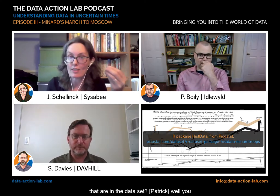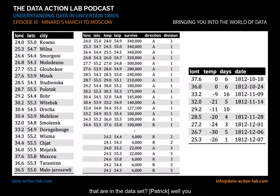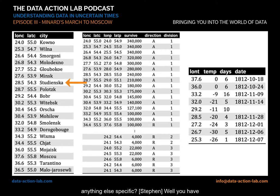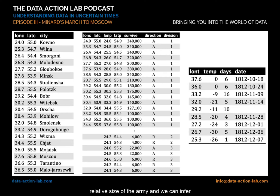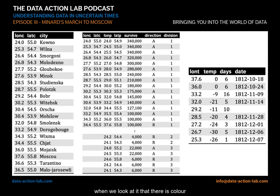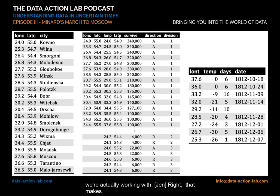I believe it's available in one of the R packages. Some of the fields in the dataset: you definitely have the size of the army at various points in time, and you also have locations. There's also temperature, which plays an important part — as temperature changes we can look at the relative size of the army and infer it had an impact. Direction of travel is there as well — there is color coding built into the visualization representing going to Moscow and coming back.